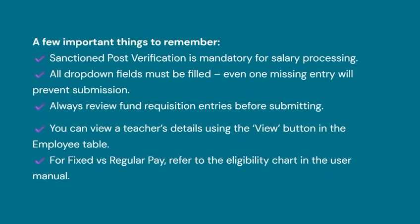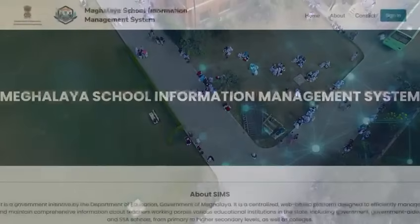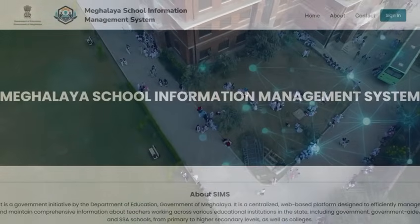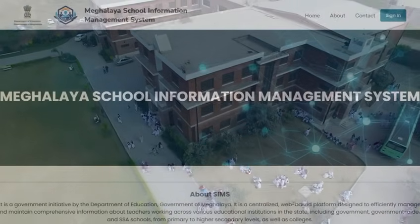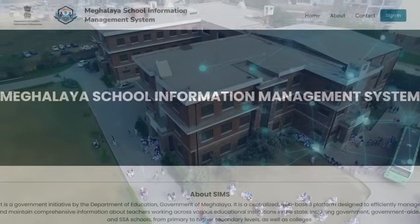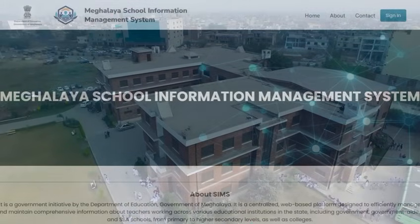A few important things to remember: Sanctioned post verification is mandatory for salary processing. All drop-down fields must be filled — even one missing entry will prevent submission. Always review fund requisition entries before submitting. You can view a teacher's details using the View button in the employee table. For fixed versus regular pay, refer to the eligibility chart in the user manual. Thank you for watching this walkthrough of the SIMS portal. We hope this tutorial helps you carry out your school-level administrative responsibilities smoothly. For any technical issues, contact your district education office or the SIMS support helpline.